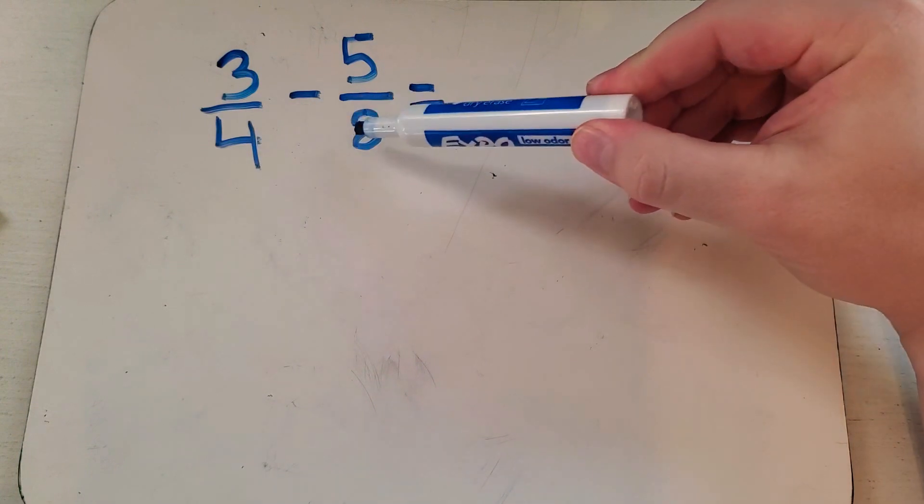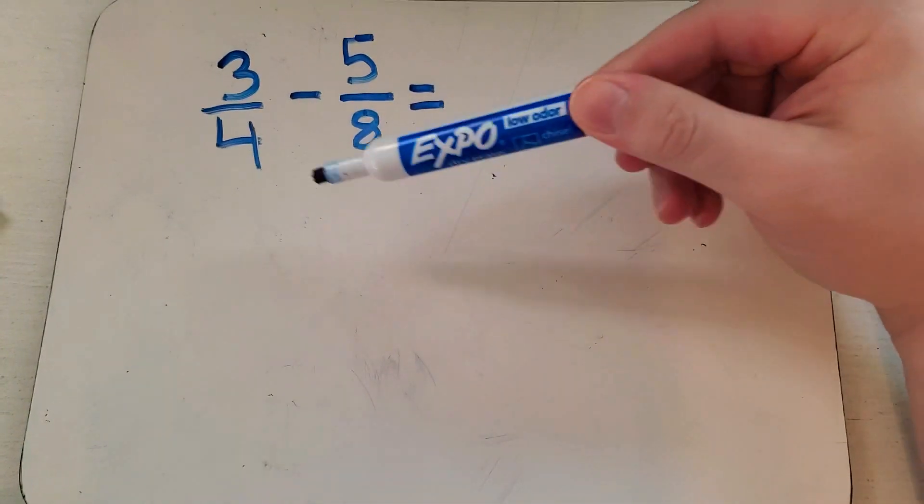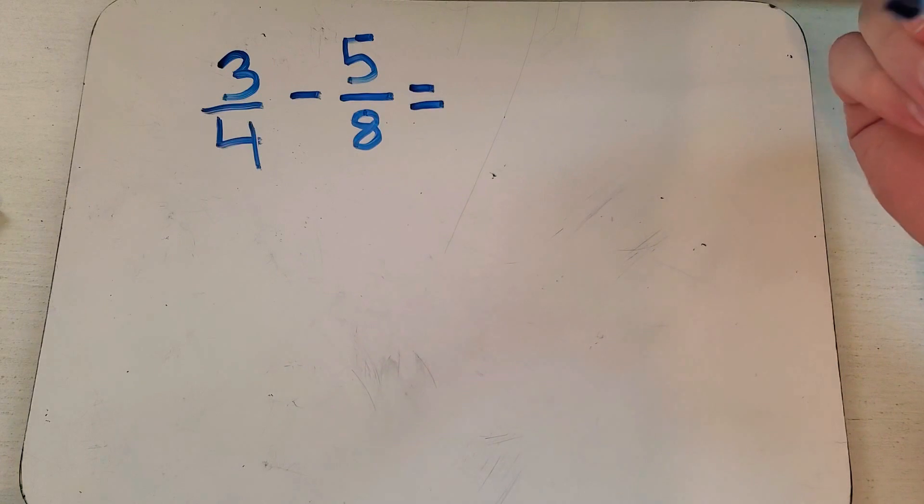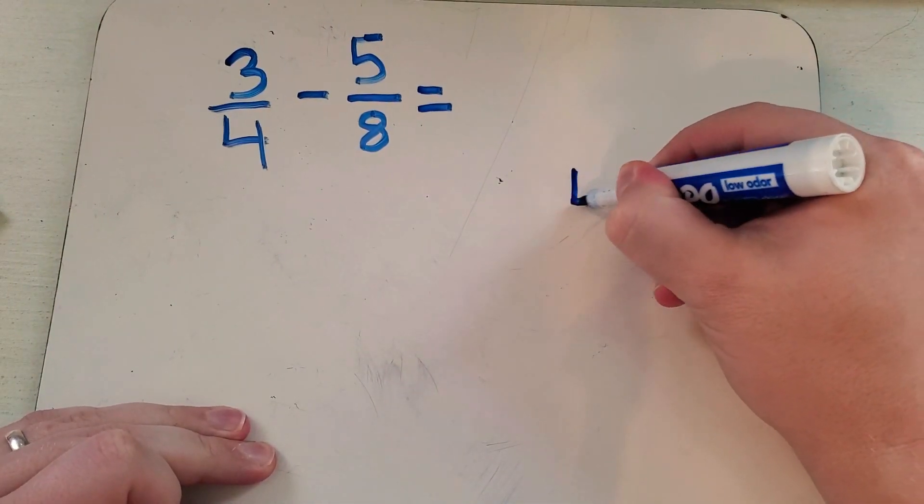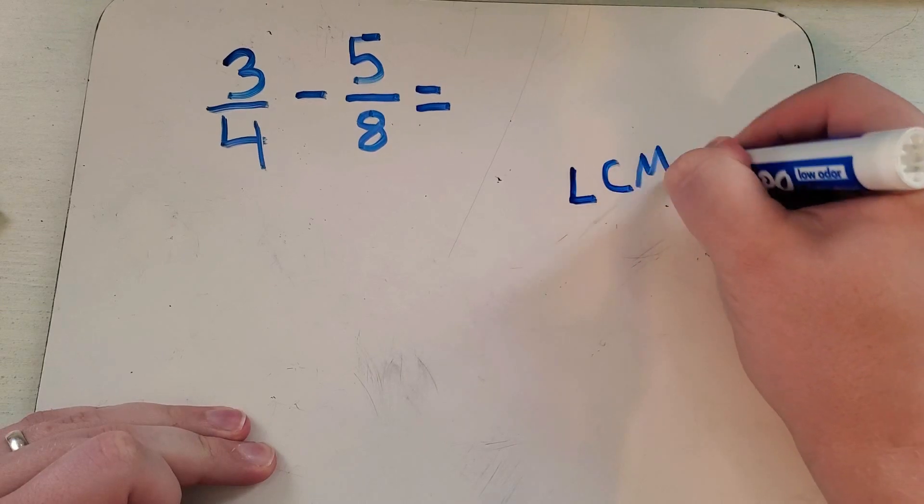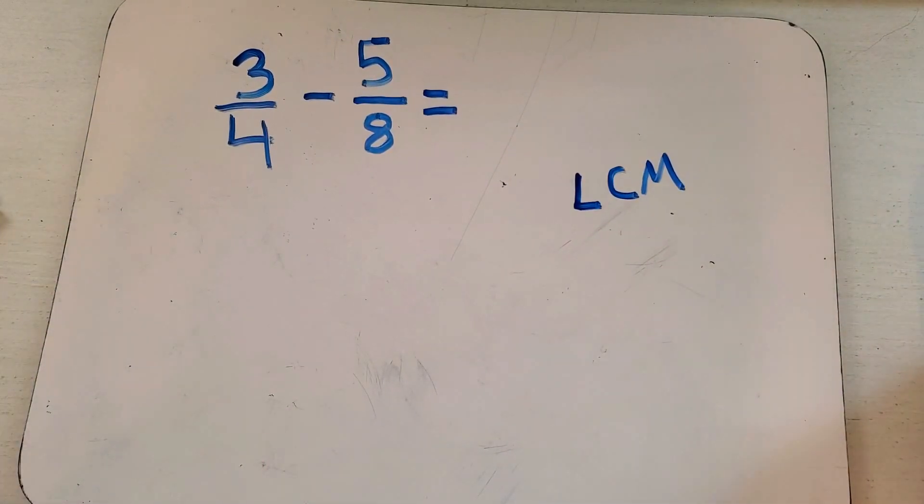So the way that we subtract or add these is that we got to make our denominators the same. For one like this, we want to find what's called the least common multiple. You might see LCM on some papers - don't let that mess you up.